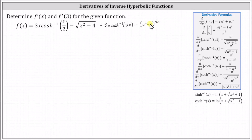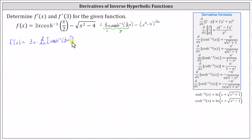To find the derivative we need to apply the product rule for the first product and then the chain rule for the second part. So f prime of x equals, for this first product, we let three x be the first function labeled f, and the inverse hyperbolic cosine function be g. Therefore f prime of x equals three x times the derivative of inverse hyperbolic cosine of one half x, plus inverse hyperbolic cosine of one half x times the derivative of three x, and then minus the derivative of the quantity x squared minus four to the power of one half.